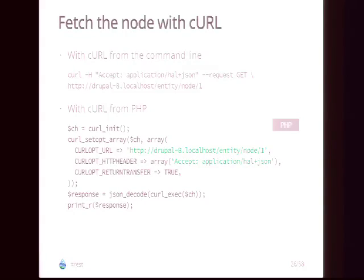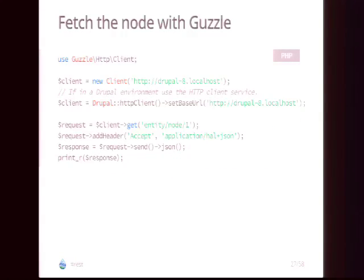One approach is fetching from the command line using curl or wget. The important thing is to specify the accept header — you want the HAL format, not HTML. The URI is the actual thing you want to get, in this case node 1. You can also do it from PHP with primitive curl, setting the URI and accept header constants. Even better is to use Guzzle, an HTTP client library now part of Drupal core. You create a client with an object-oriented API, set the URI and accept header, call the send method, and then decode the JSON response to get your node array.